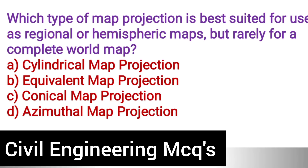Next question: Which type of map projection is best suited for use as regional or hemispheric maps but rarely for a complete world map? Option A: Cylindrical map projection. Option B: Equivalent map projection. Option C: Conical map projection. Option D: Azimuthal map projection. The correct answer is option C, conical map projection.